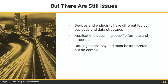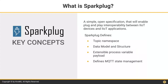This is a huge problem. Applications also assume specific formats and structures — a historian application, for example, may need a specific data format to read data properly. One of the key advantages of MQTT — that it's data agnostic — is also a weakness when connecting factories and applications. The payload must be interpreted but there is no context. So when it comes to factories, there is still a gap, and something is still missing. This is where Sparkplug comes into play.